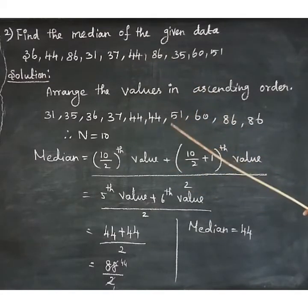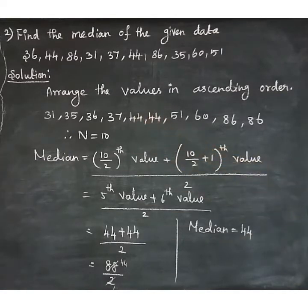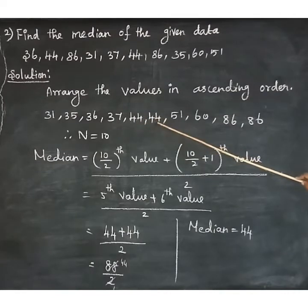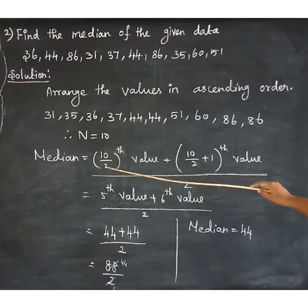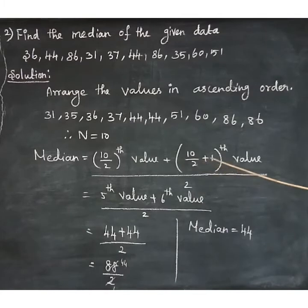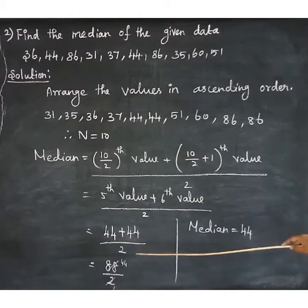Since the number of observations is even, there are 2 middle values — 44 and 44. We have to find the average of those two middle values. So 10 by 2 is 5, 5 plus 1 is 6. So we need the 5th value plus the 6th value divided by 2. The 5th and 6th values are both 44, so 44 plus 44 divided by 2.